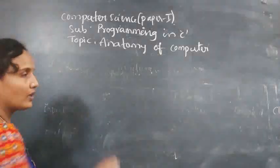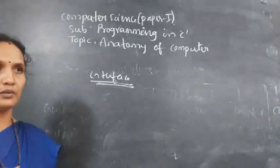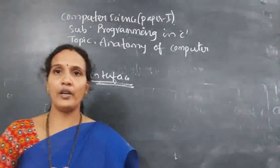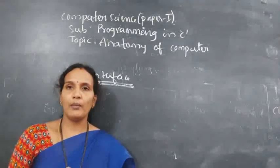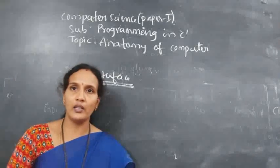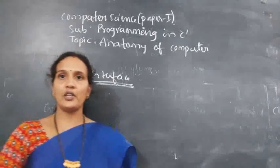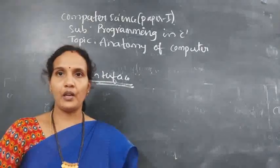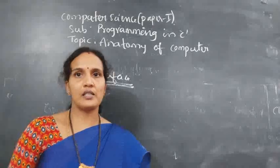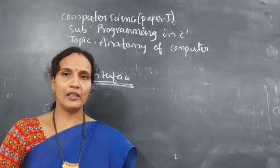Next is the interface unit. The interface unit connects your CPU with the memory. The CPU executes the instructions, but those instructions are in the memory. So the instruction should come from memory to the CPU. This interface unit connects the CPU with the memory so that data can be transferred between them. Here we have a data bus, address bus, and control bus — each with a different purpose. We will discuss that in the next class.